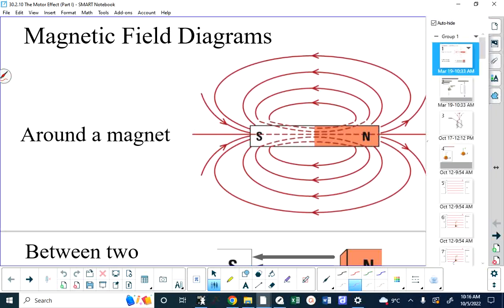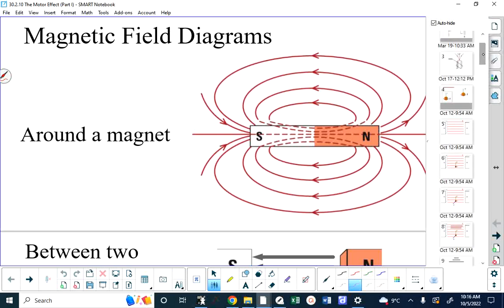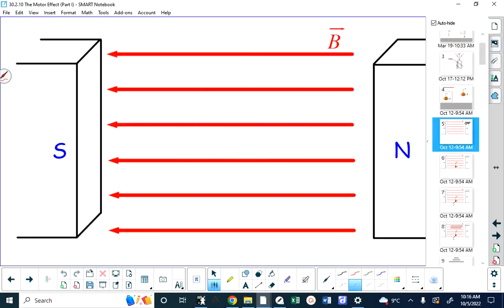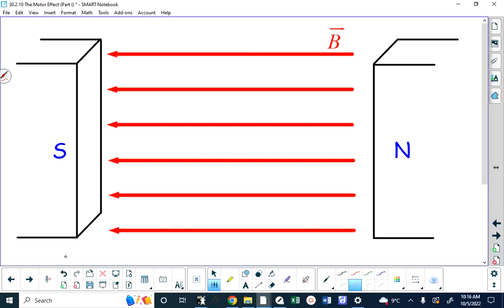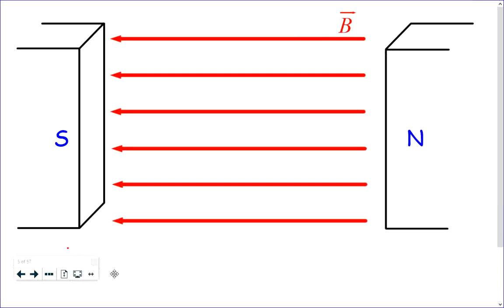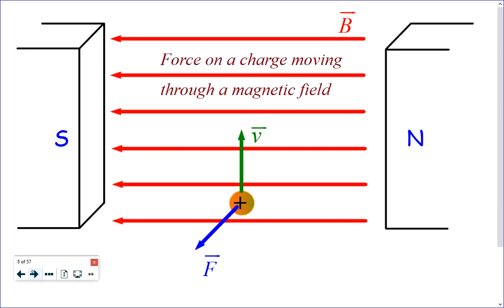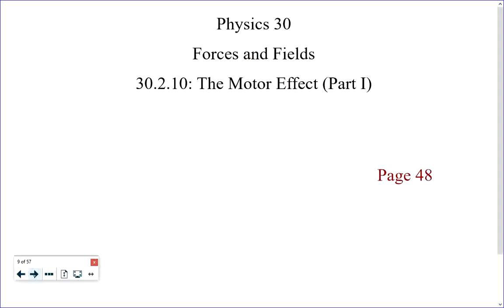When you have a magnetic field and a charged particle is moving in it, that charged particle will experience a magnetic force because the moving charge has its own magnetic field, which interacts with the external field it's moving through. The direction of that force is found using the flat right-hand rule. Let's take a look at this next lesson.